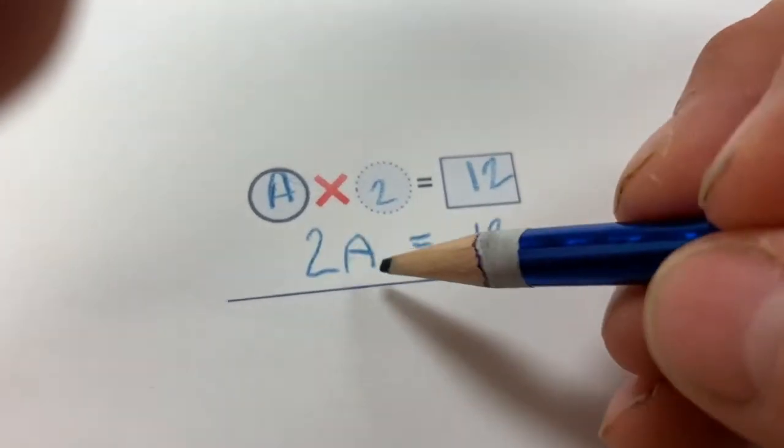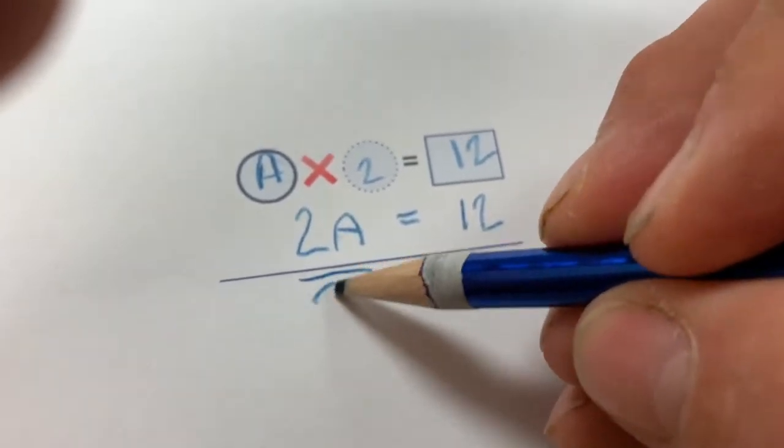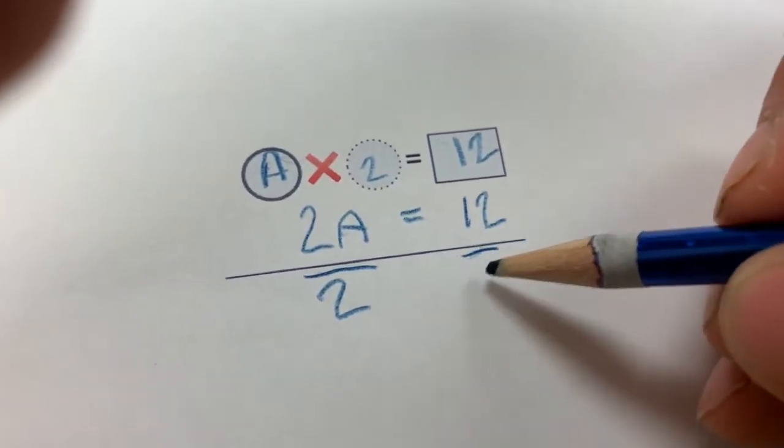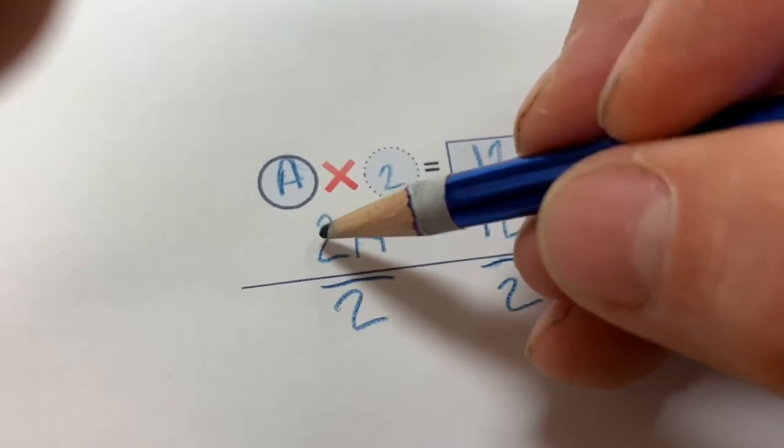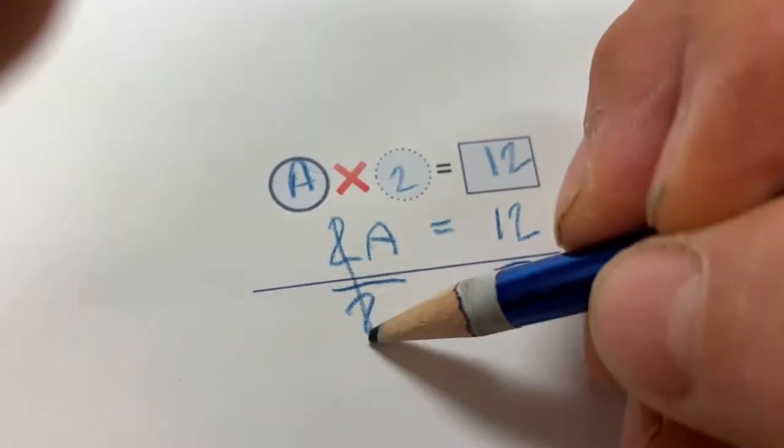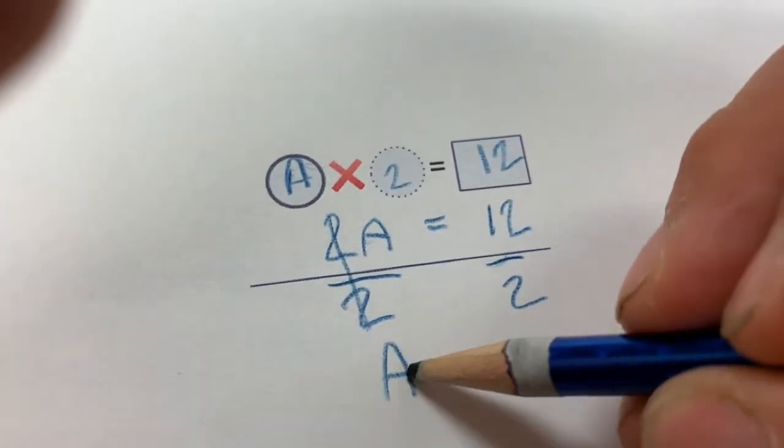This is twice as big as it needs to be. So I'm going to divide by 2, I'll have to divide this side by 2. So this is 2 halves or 1A equals 6.